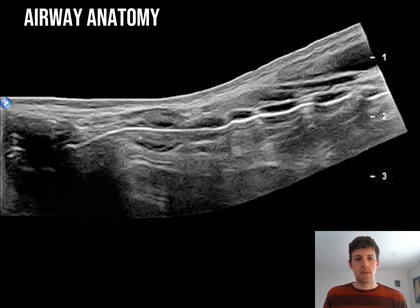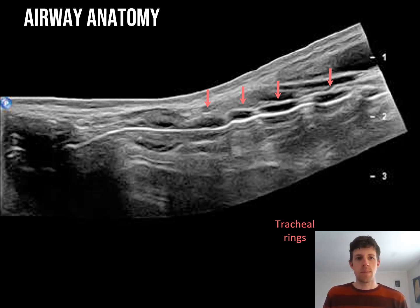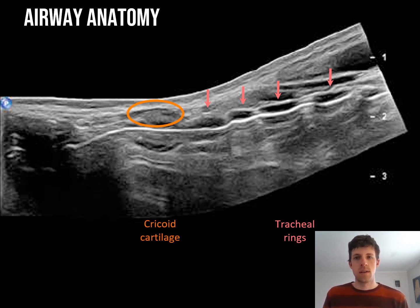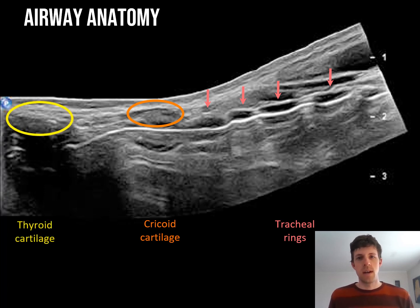This is the anatomy you will be looking for. I typically start with the most caudal landmarks, the tracheal rings. These are identified classically with the beads on a string appearance. Once you identify those, you can slide your transducer cephalad until you see the cricoid cartilage, which is sometimes described as a hamburger. After locating this, continue to slide cephalad until you find the thyroid cartilage. Your target, the cricothyroid membrane, will appear as a bright white line in between.